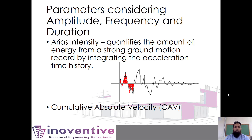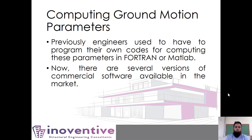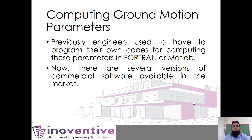Another parameter that considers all three aspects is cumulative absolute velocity. Previously, engineers had to program their own code using Fortran, MATLAB, or other languages to compute these ground motion parameters, but now there are several commercial software options available. I use SeismosSignal and recommend it — if you have your college or institution IDs, you can get it for free. Hopefully in my next video I will give a tutorial on how to use SeismosSignal. With this, I would like to conclude my video. Thank you.